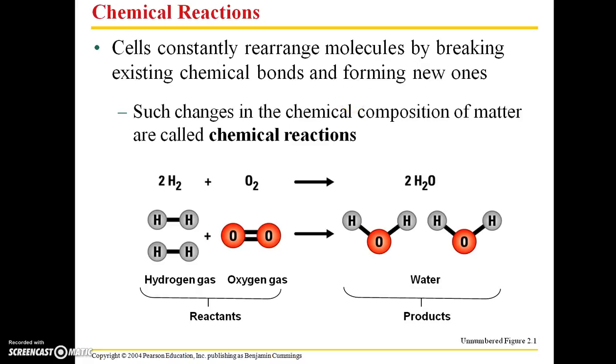Cells are constantly rearranging molecules by breaking existing chemical bonds and forming new ones. So a great example of this is when we chew food and use chemical digestion in our stomachs. We are breaking down existing chemical bonds in those foods we're eating, and then our bodies are going to use those elements. They're going to be rearranged into our own molecules to support normal functioning cells.